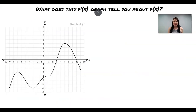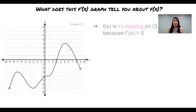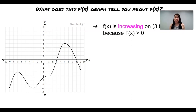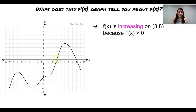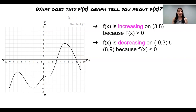Let's take a look at an example. Here we have a graph of f prime of x. f of x is increasing on the interval from three to eight because that's where f prime of x is positive. f of x is decreasing from negative nine to three and also from eight to nine, because that is where the f prime of x graph is negative.